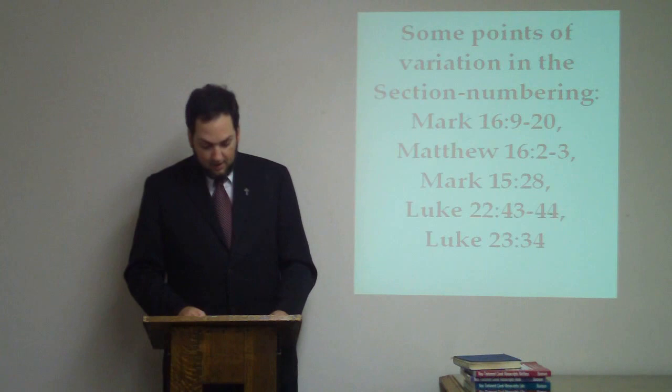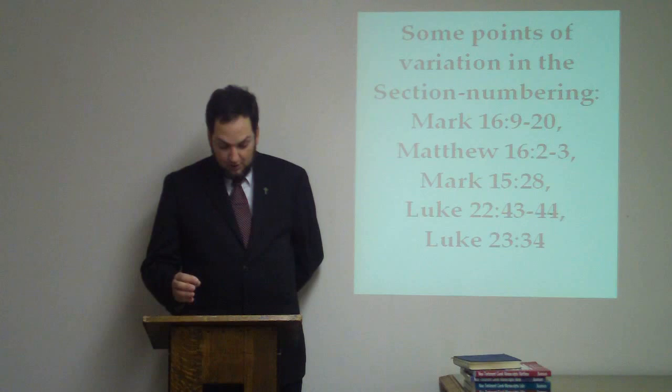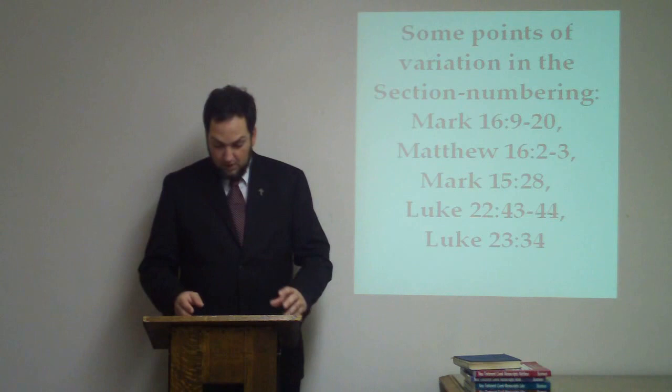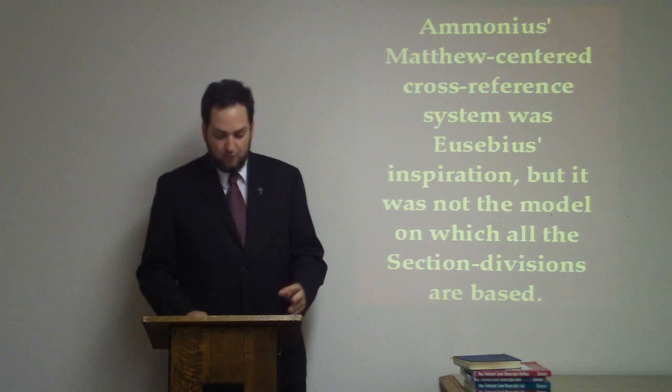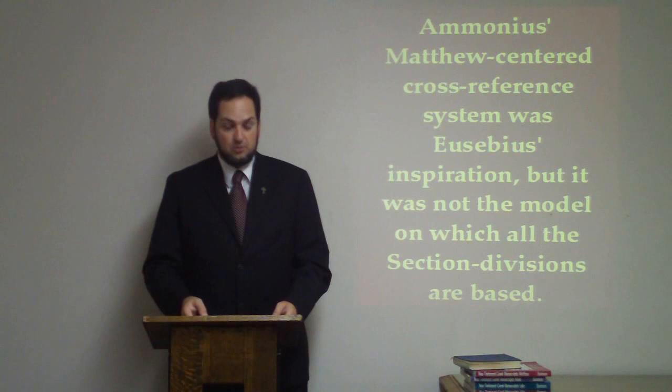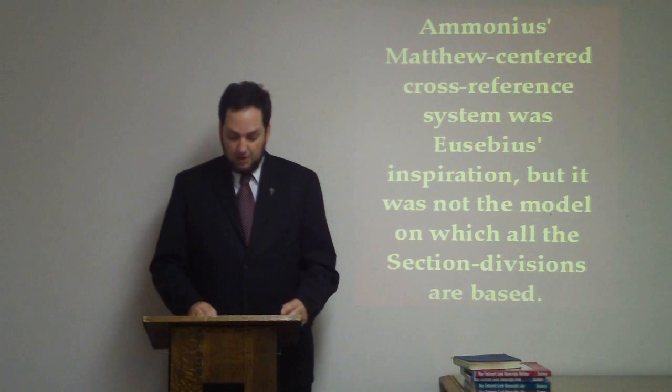A question has been raised about whether the section numbers should be called the Ammonian sections or the Eusebian sections. In the 1800s and early 1900s, the term Ammonian section was used, and that name has stuck, but it conveys an impression that has proven to be false. Ammonius' Matthew-centered cross-reference system served as Eusebius' inspiration, but the section numbers as we know them today were made by Eusebius, not by Ammonius. In 1871, John Bergen demonstrated that Eusebius, not Ammonius, created the Ammonian sections.